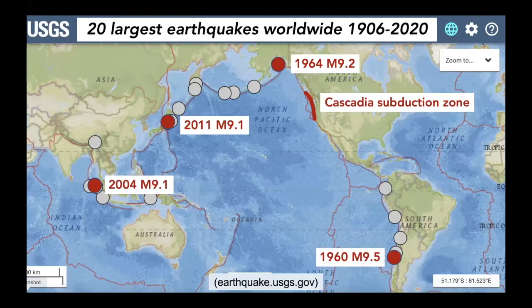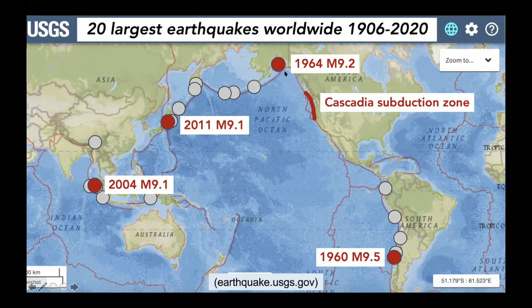This map shows the 20 largest earthquake locations for the last 100 years or so, including the top four largest ever known earthquakes. The largest was in 1960, magnitude 9.5 in Chile. The second largest in 1964, magnitude 9.2 in Alaska. Then the 2004 and 2011 earthquakes, which were both about magnitude 9.1. Notably, the Cascadia subduction zone does not have an earthquake plotted because Cascadia has not experienced a great earthquake since the year 1700.